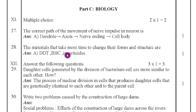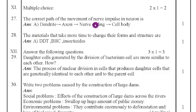Their 11th main. 27th question. The correct path of the movement of nerve impulses in neuron is the option E, dendrite, axon, nerve ending and cell body. 28th question. The material that takes more time to change their form and structures are that is DDT, BHC and insecticides. 12th question answer the following questions.